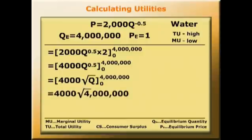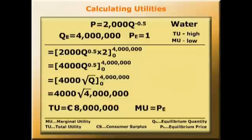Which equals 4000 times the square root of four million, so TU is eight million, but MU is the same as the equilibrium price of just one.